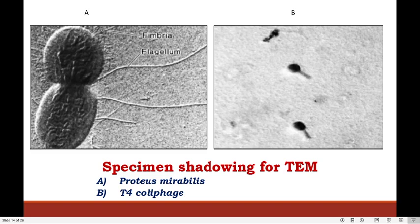Here you can see specimen shadowing for TEM. Figure A shows Proteus mirabilis and figure B shows T4 coliphage.